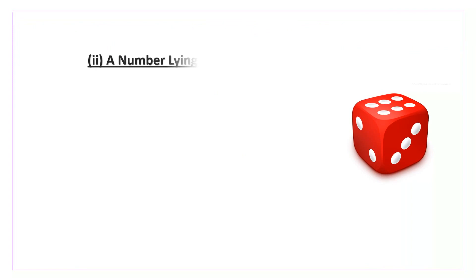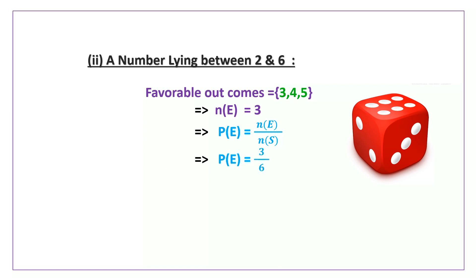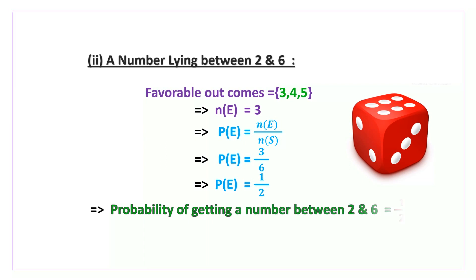Now a number lying between 2 and 6. The favorable outcomes are 3, 4, 5. So n of e is equal to 3. Now the probability of an event p of e is equal to n of e by n of s. p of e is equal to 3 by 6, which upon simplification equals 1 by 2. So the probability of getting a number lying between 2 and 6 is equal to 1 by 2.